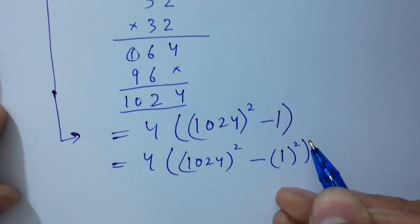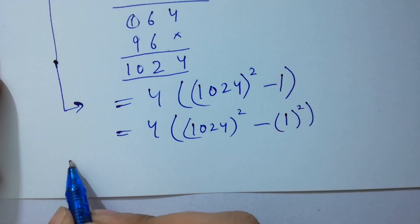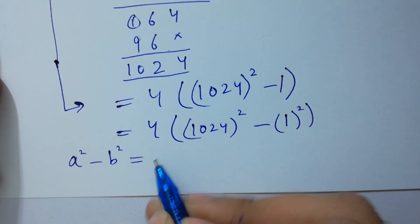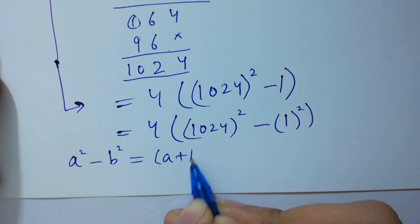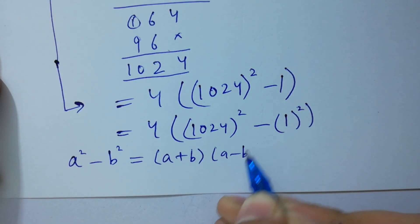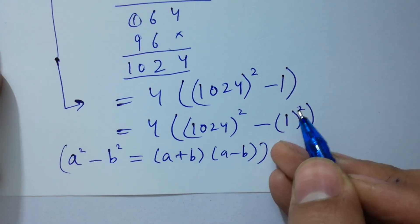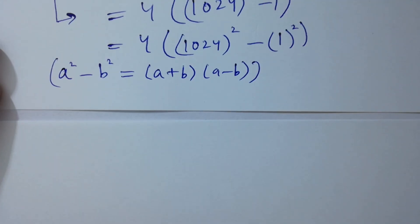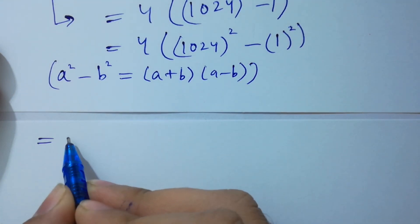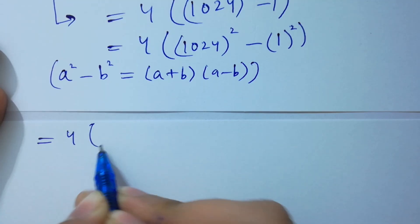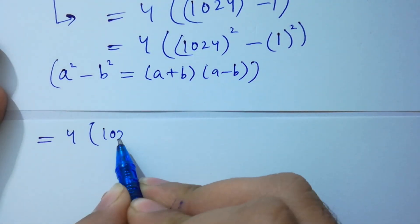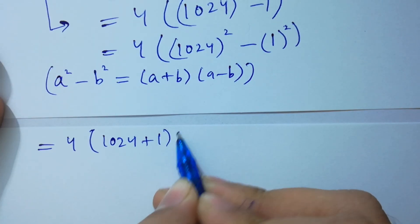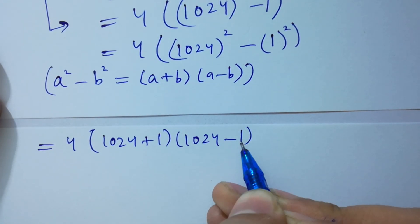Using the identity a squared minus b squared equals (a plus b)(a minus b), we have 4 times (1024 plus 1) times (1024 minus 1).